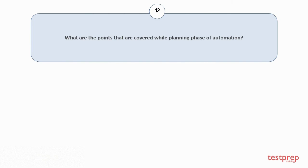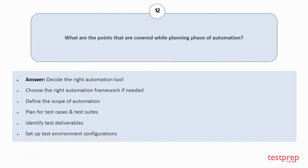Question number twelve: What are the points covered during the planning phase of automation? One, decide the right automation tool; two, choose the right automation framework if needed; three, define the scope of automation; four, plan for test cases and test suites; five, identify test deliverables; six, set up test environment configurations.